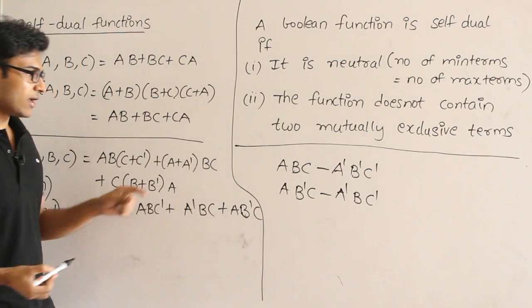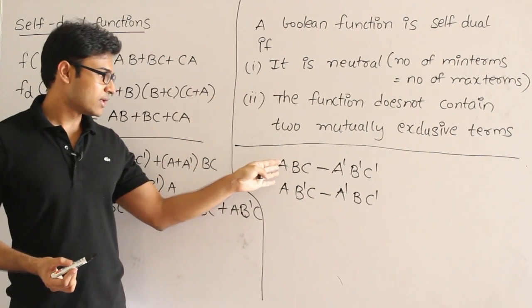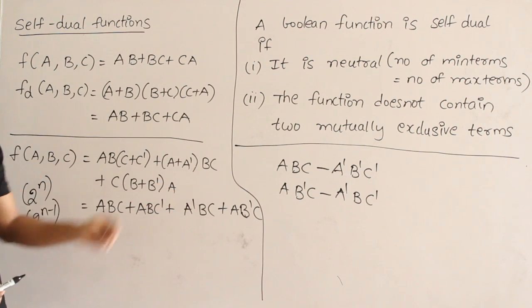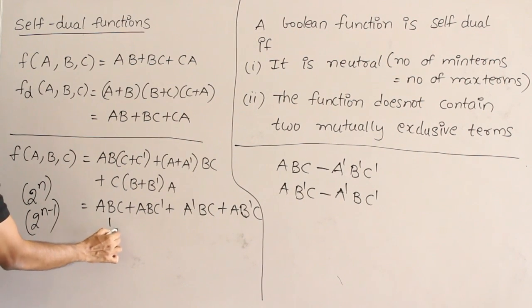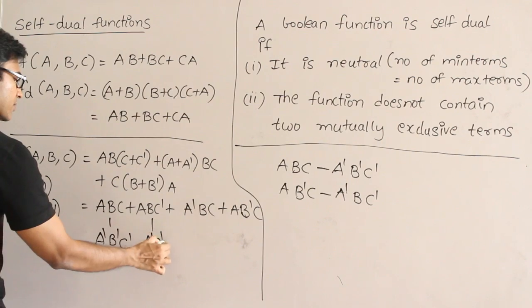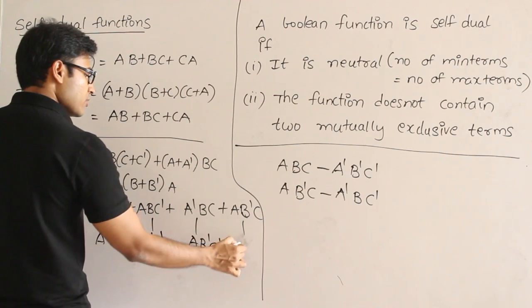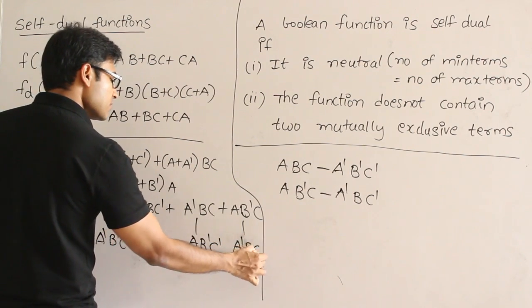So likewise, these minterms, you know, after finding out the difference between the original term and the minterm, just see all these terms and try to find out the minterms for each term. What is the minterm for this? A prime B prime C prime. What about this? A prime B prime C. What about this? A B prime C prime. What about this? A prime B C prime.